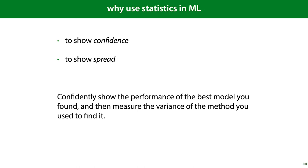There are two reasons to use statistics in machine learning. What we've talked so far is the use of statistics to show confidence, to show that the estimate that we're reporting is likely close to the true value. Another reason is to show spread. This is more about providing insight to the user. Say that I train a classifier by gradient descent.